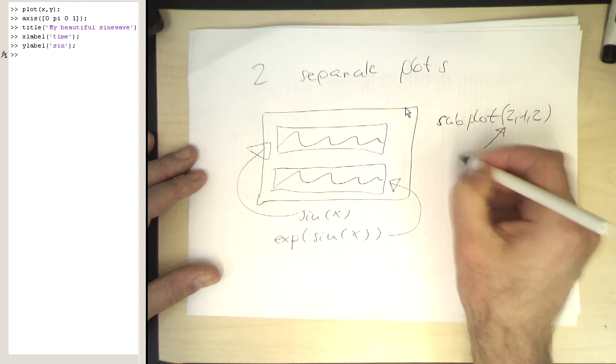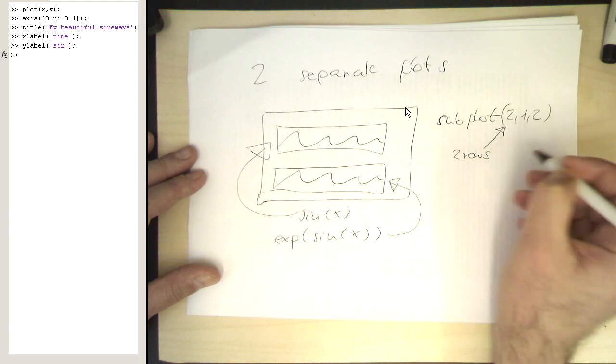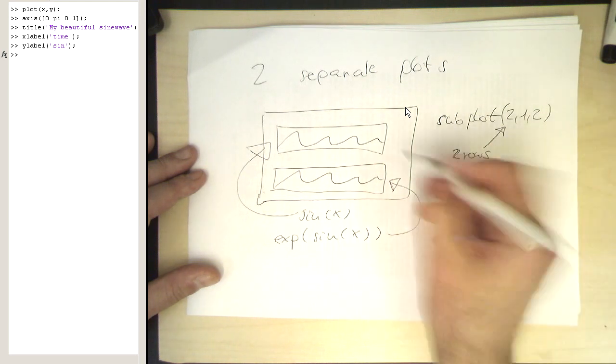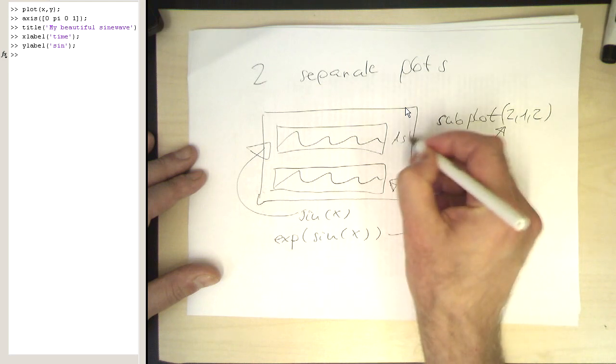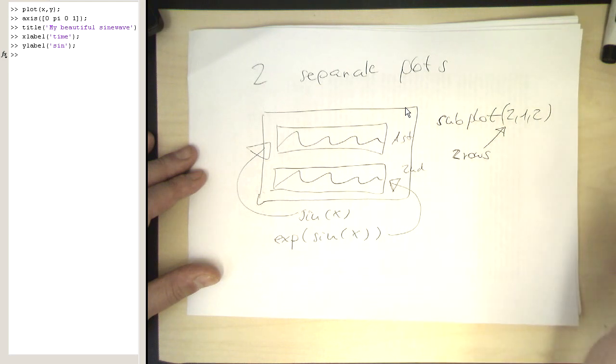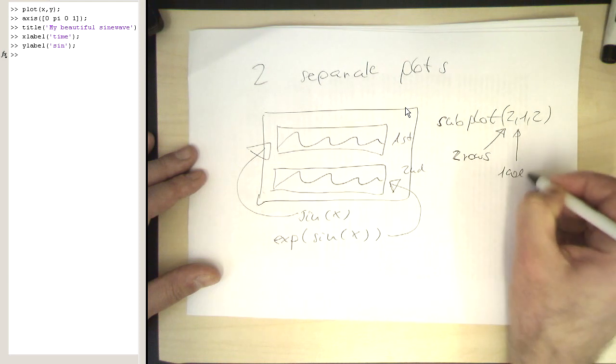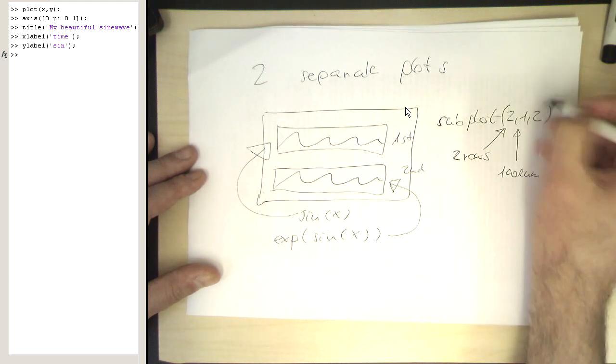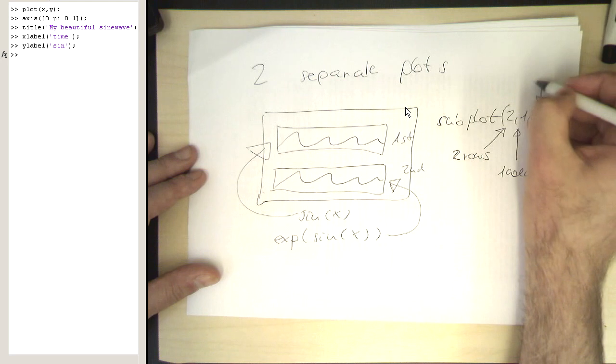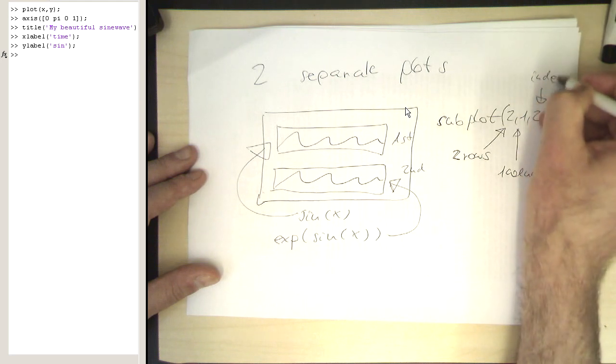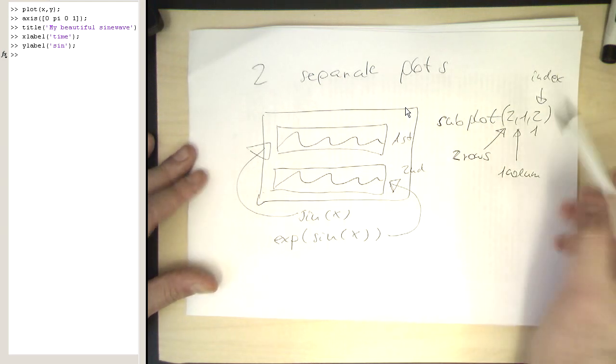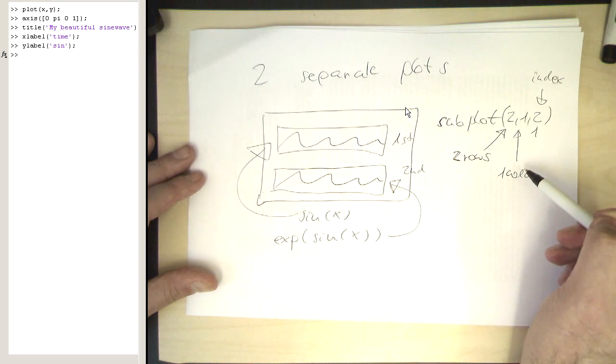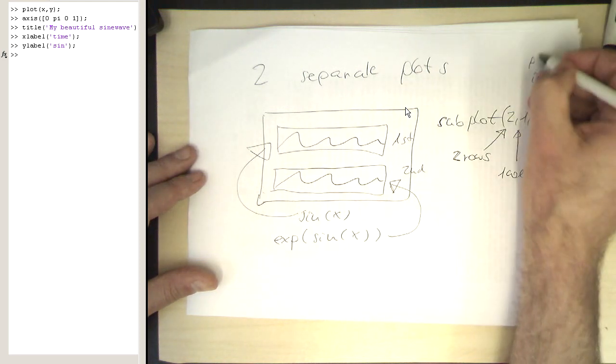So if you write something like this then this means here we would like to have two rows of plots, so what we have here first row and that's the second row, one column, and this is the plot index. Yeah so this could be two or it could be one, so the two corresponds to this one, the one to this plot here. So that's the plot index.